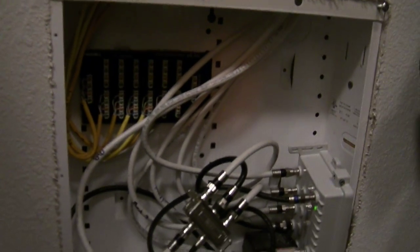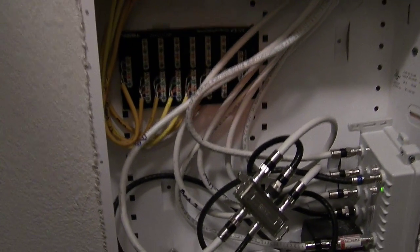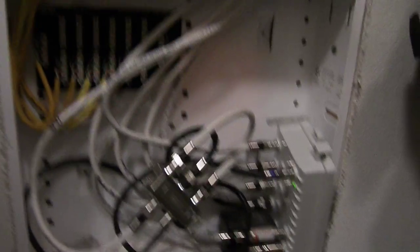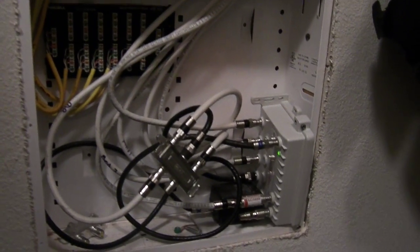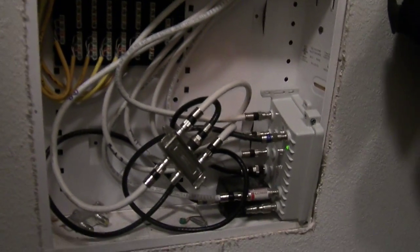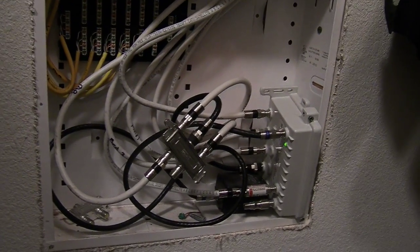This is in a master bedroom closet. What you want to do first of all is make sure that this is all connected. Usually when people move out of a house, this all gets disconnected and piled up. This box basically is the cable and phone systems coming in from the outside of the house into the house.